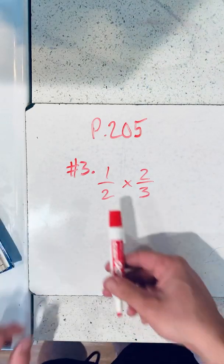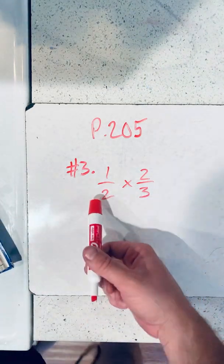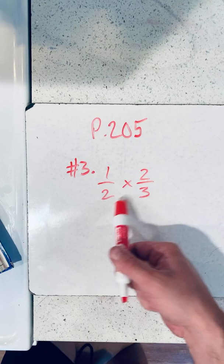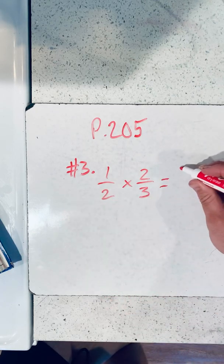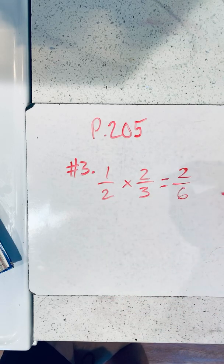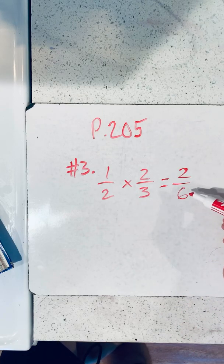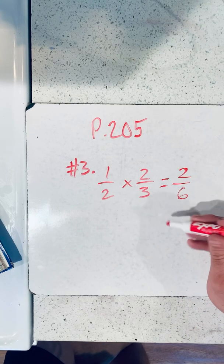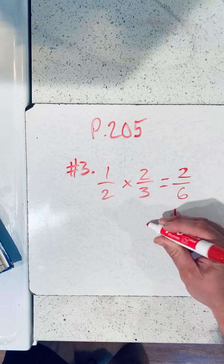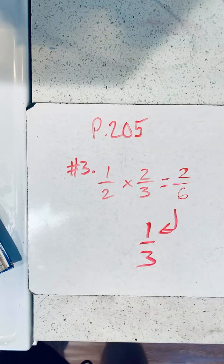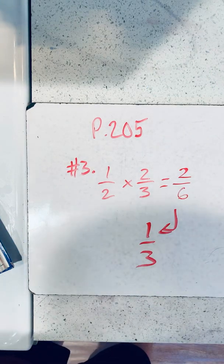So right here, since it's super simple, we probably can just multiply it out. 1 times 2, 2 times 3, which equals 2 over 6. Now, if it's 2 sixths, we all know that has to be 1 third. So that's the super simple one.